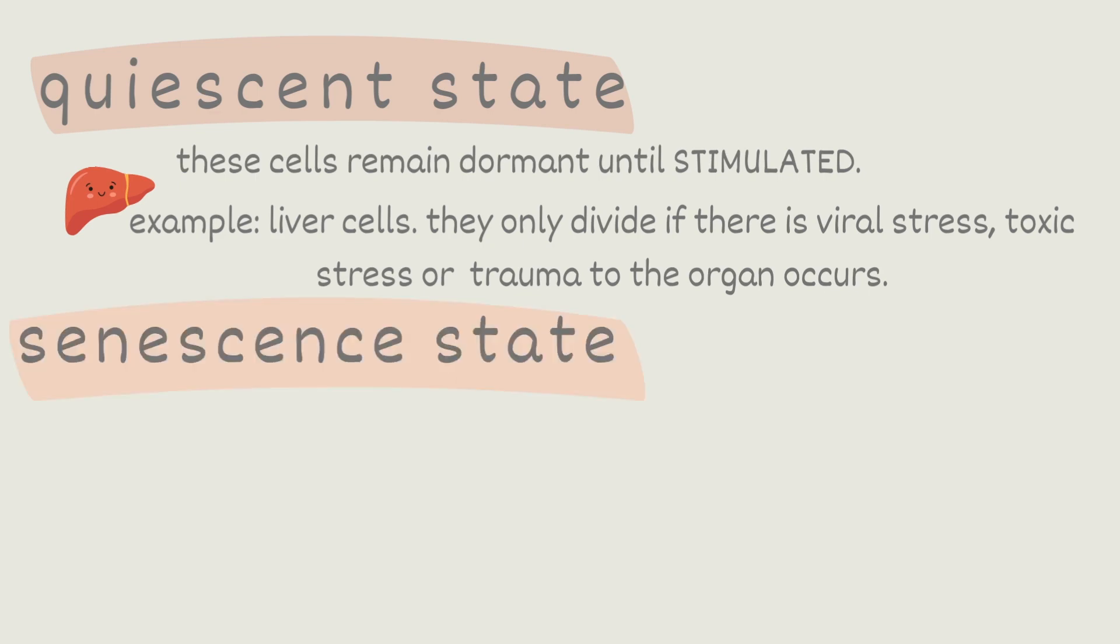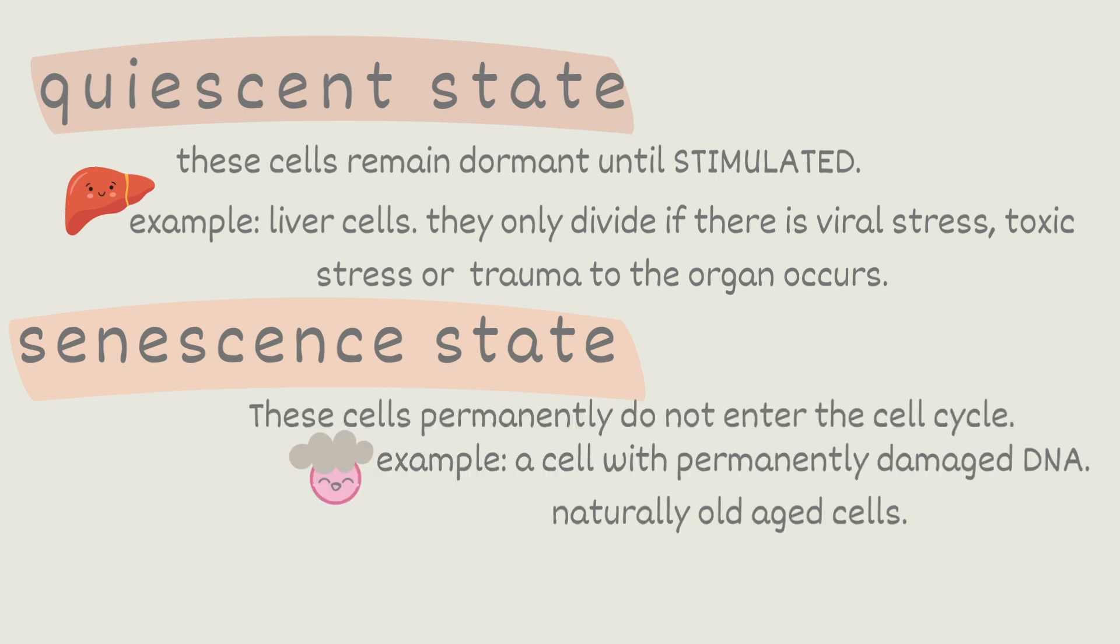Next is the senescent state. These cells permanently do not enter the cell cycle. An example is a cell that has DNA that is too damaged for repair or naturally aged cells that we all get as we get older. These cells function begins to deteriorate and the cell eventually becomes slower. So we don't want those cells going through the stress of a cell cycle nor do we want them to be replicated.